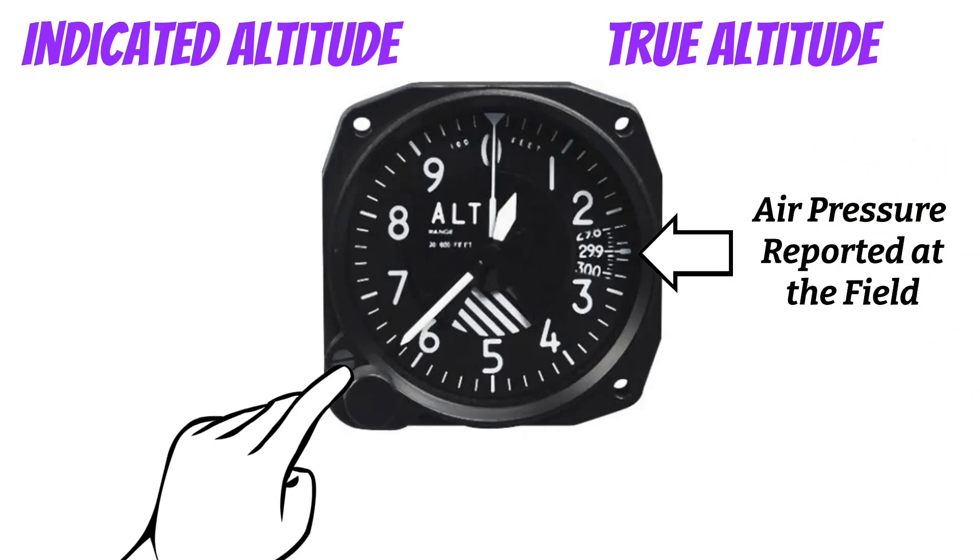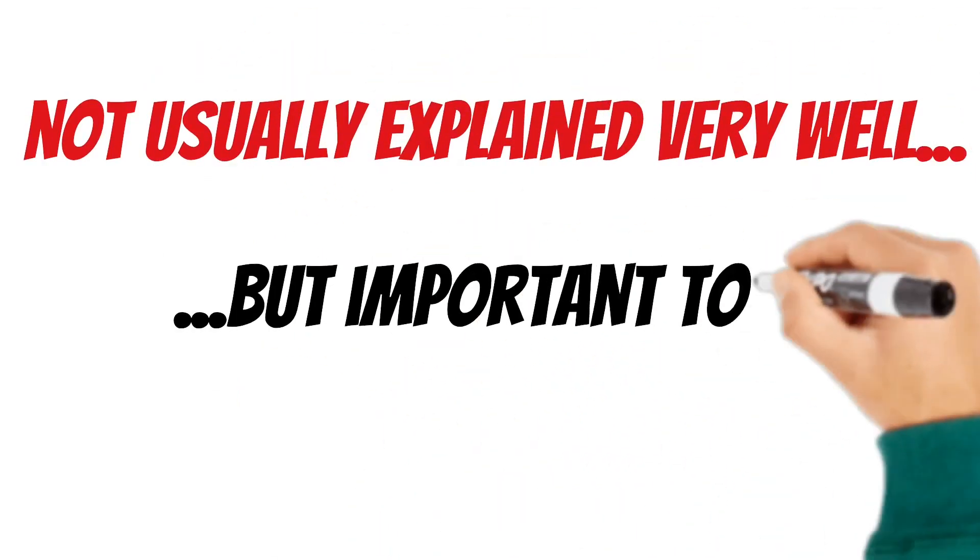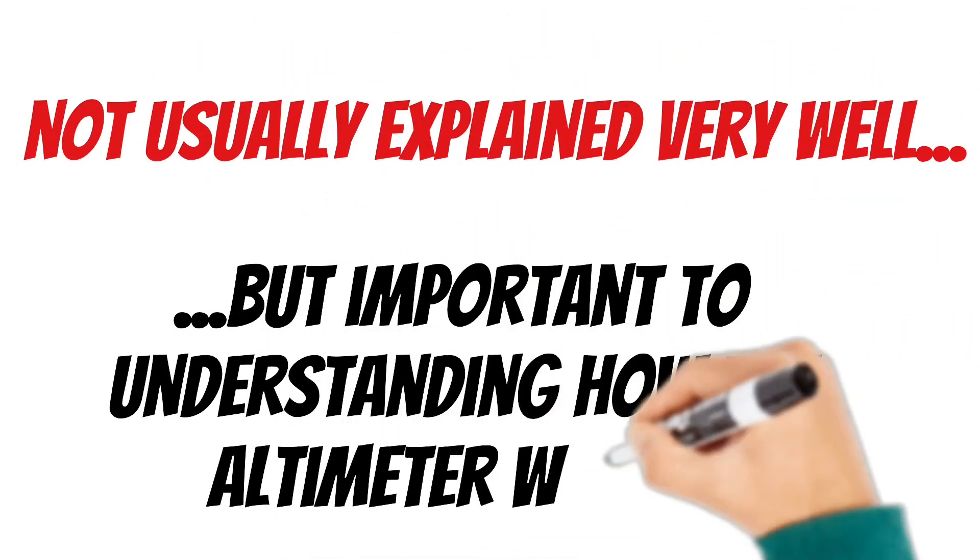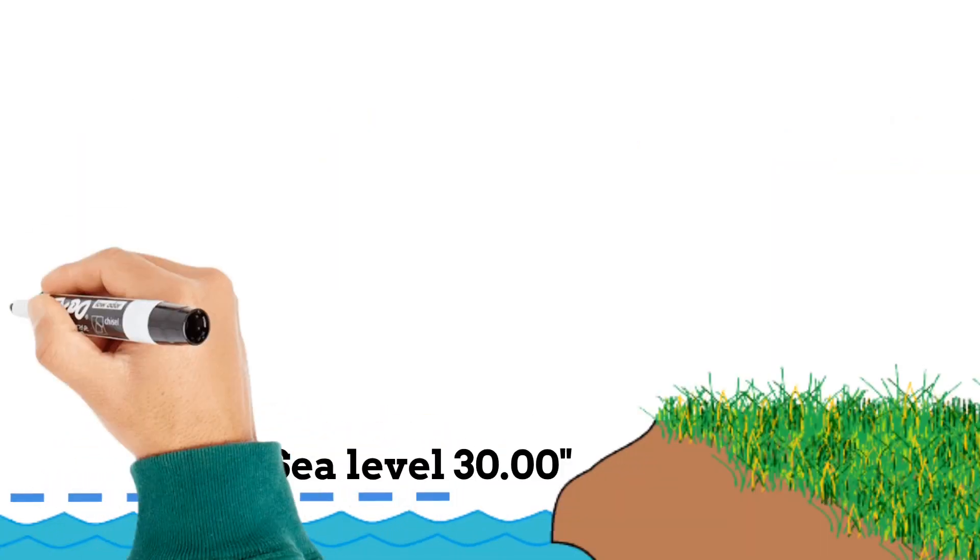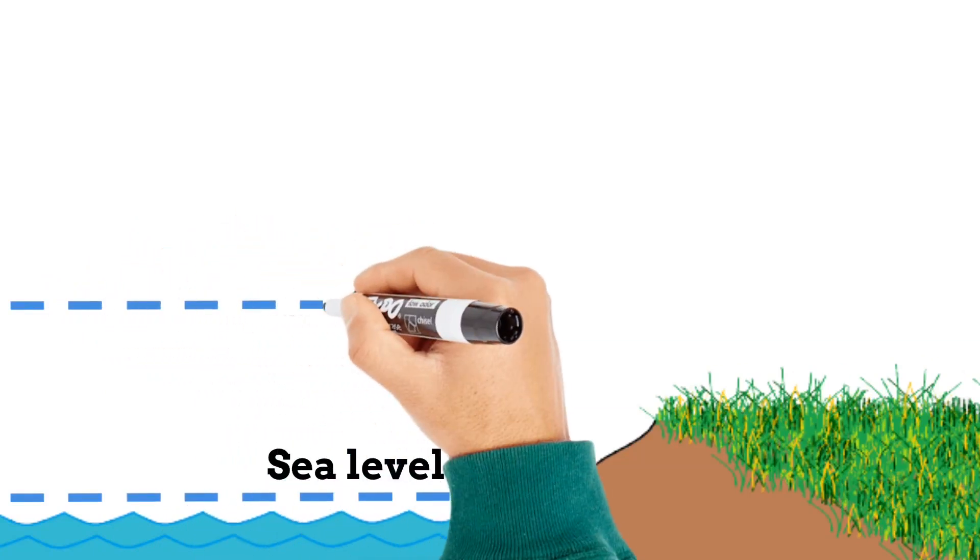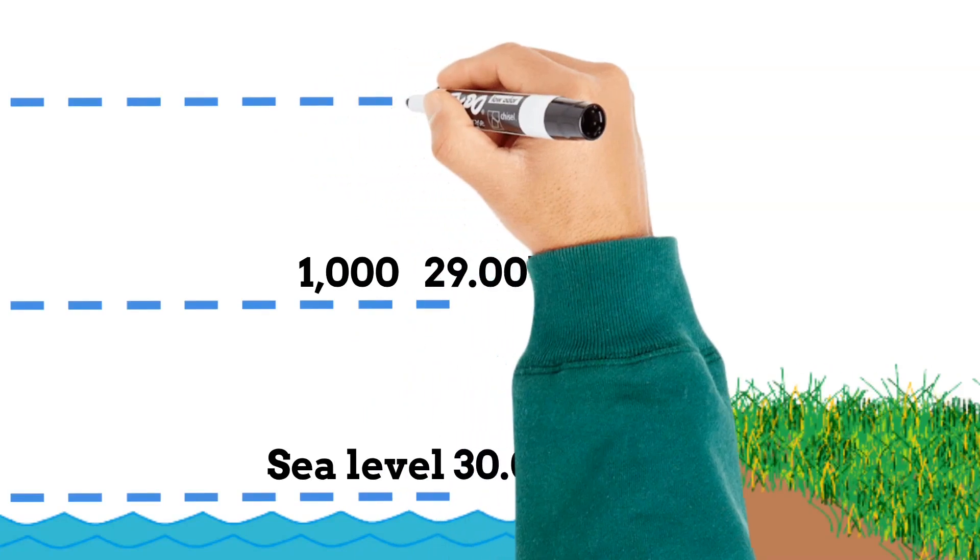Now what I'm about to tell you next is not usually explained very well, but I believe it's important to understand how the altimeter works. Remember the other day how I told you that air pressure changes 1 inch of mercury every thousand feet? Now this is true, and because of that, the altimeter is able to sense what altitude you're at and give you a reading.